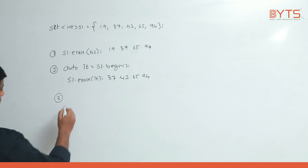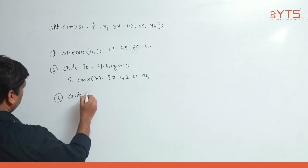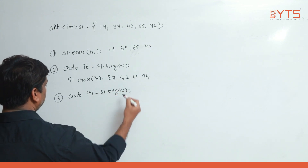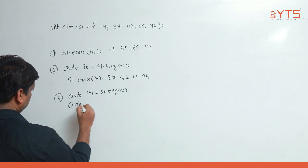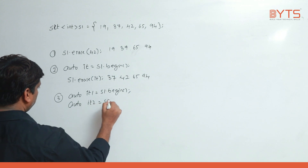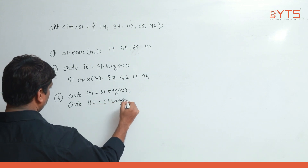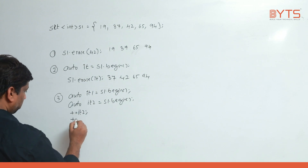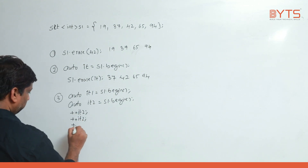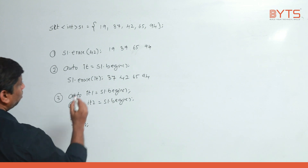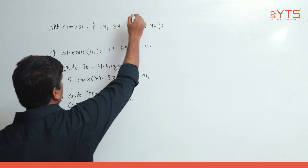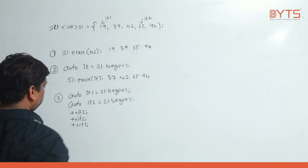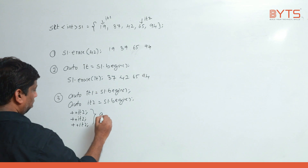For the third version using a range: auto it1 = s1.begin(), auto it2 = s1.begin(). Then I do ++it2 four times, so it2 advances four positions forward. Alternatively you can write advance(it2, 3).